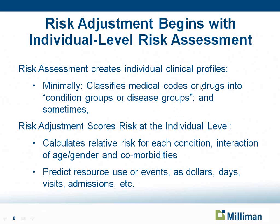Once the individual is assessed using information from their current claims or medical records, the risk adjuster will calculate a relative risk for the person. It's a relative risk score characterized as a score you compare to 1.0, with 1.0 meaning average. Most risk adjusters provide one score. That score is also used to predict typically resource use or expected costs in a projection period. However, there are models that can also predict events, days, admissions, visits, and avoidable medical events — those would be specialized risk adjusters.